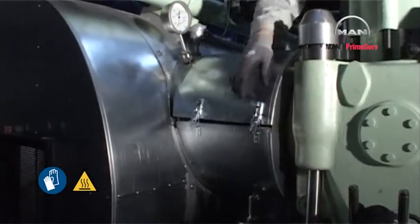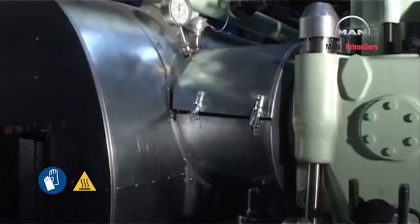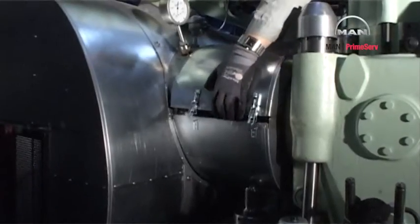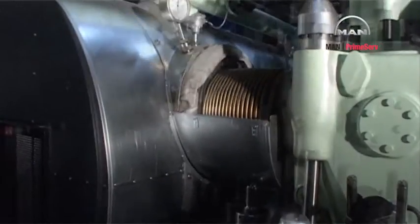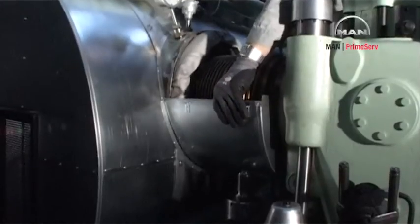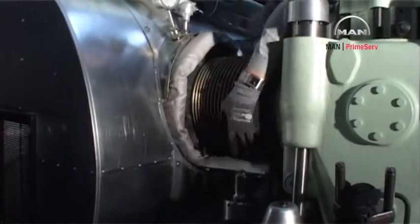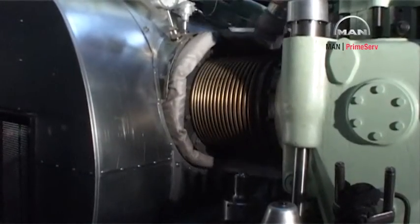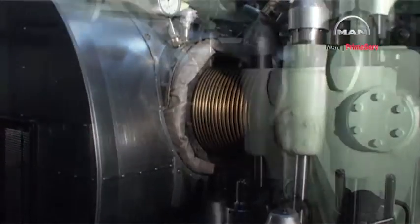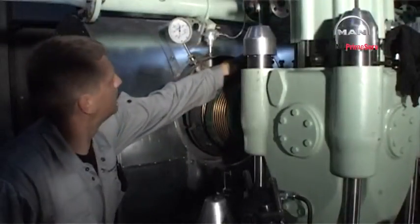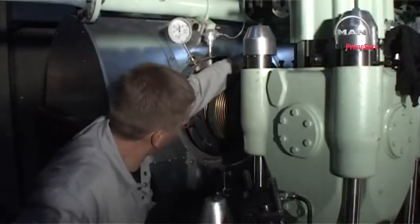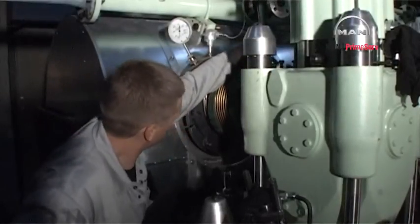Remove the protective jacket from the intermediate pipe between the exhaust receiver and the exhaust valve. Remove the intermediate pipe.